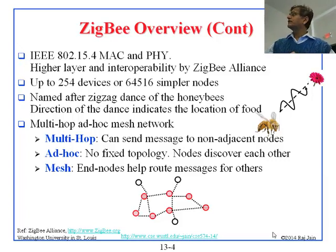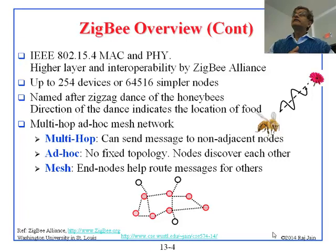254 are the full function devices. The name 'Zigbee' is named after the jig-like dance of the honeybees. Why is it called Zigbee? It is named after the bees and their dance.